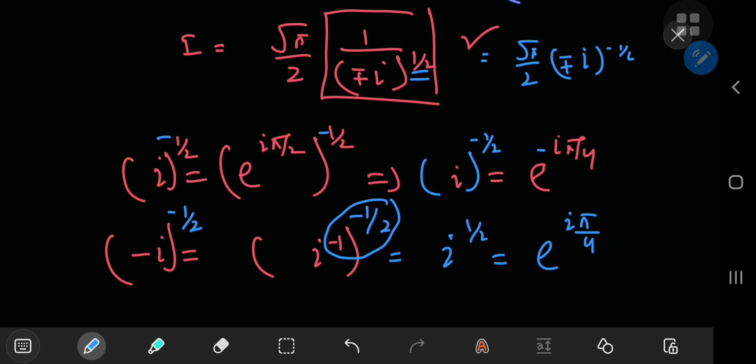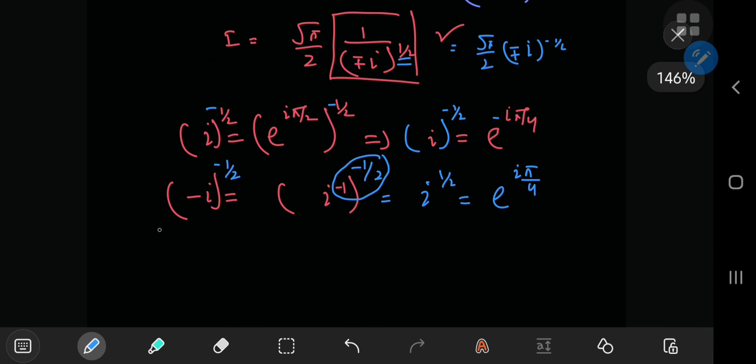which is e to the i pi by 2 to the 1 by 2, which is e to the i pi by 4, correct? So here are the two cases sorted out for the negative and the positive cases. Now, hopefully, we can keep track of the negative signs properly. So we have the square root of pi by 2, and the negative case,